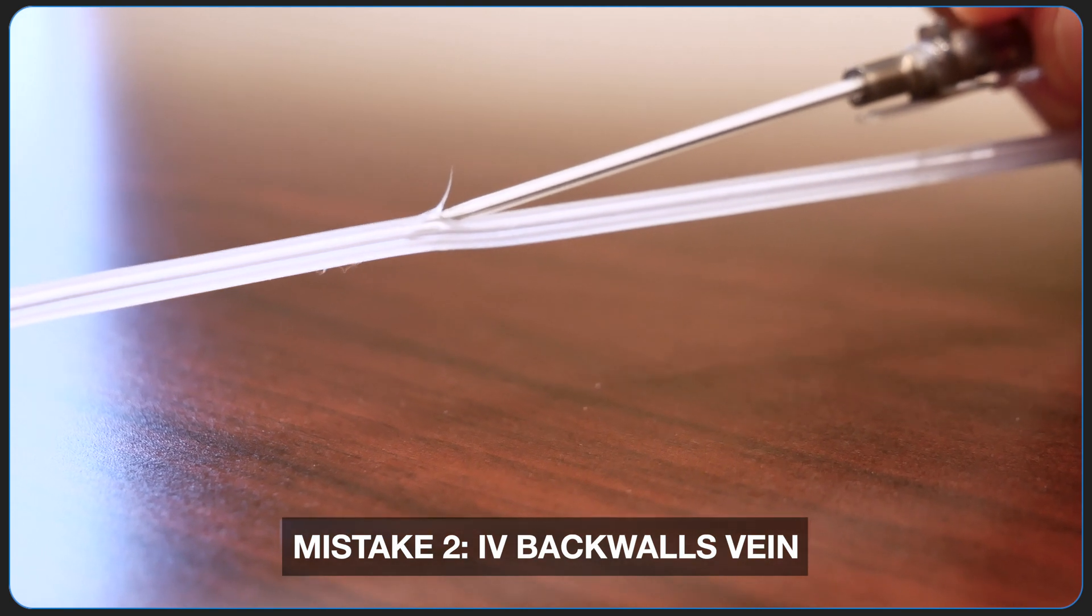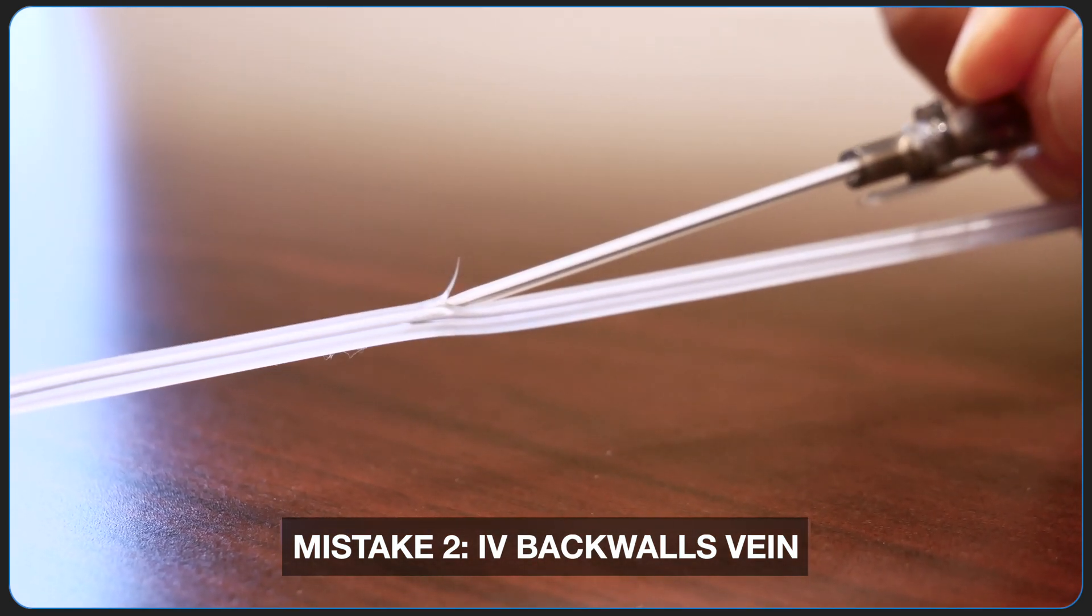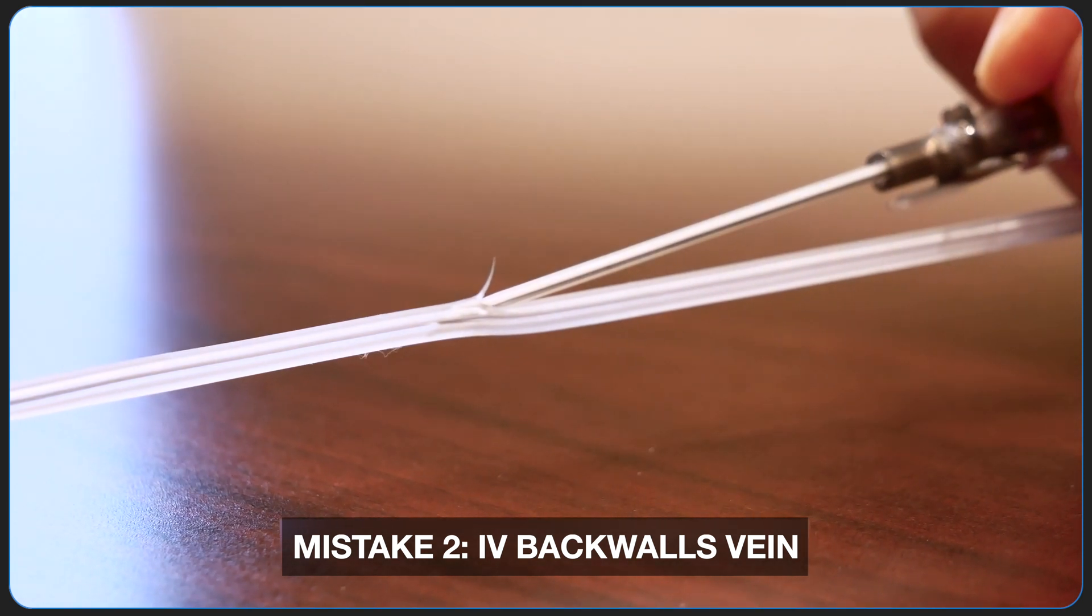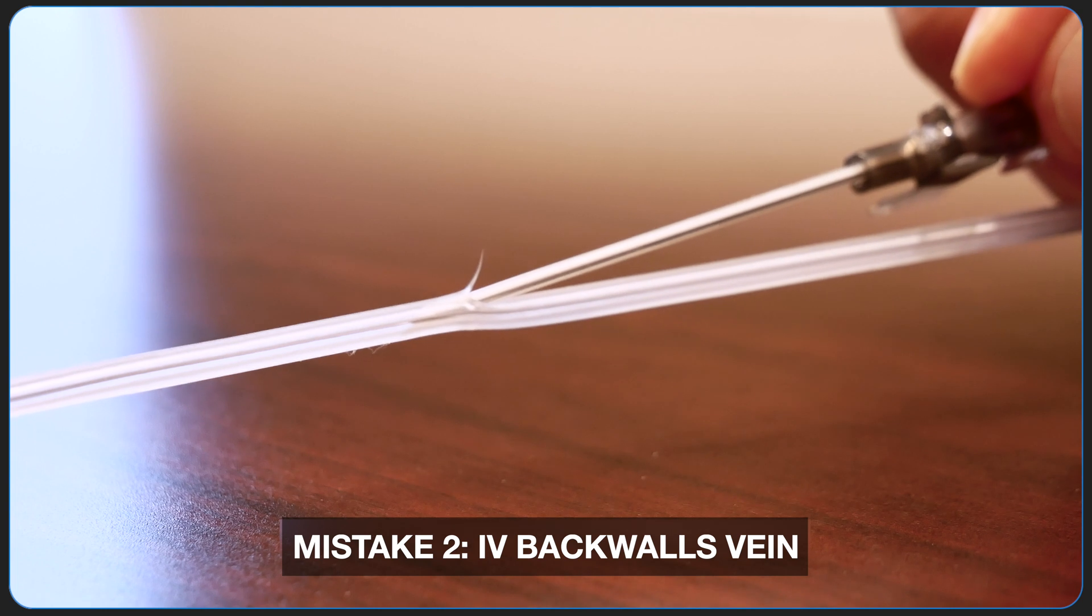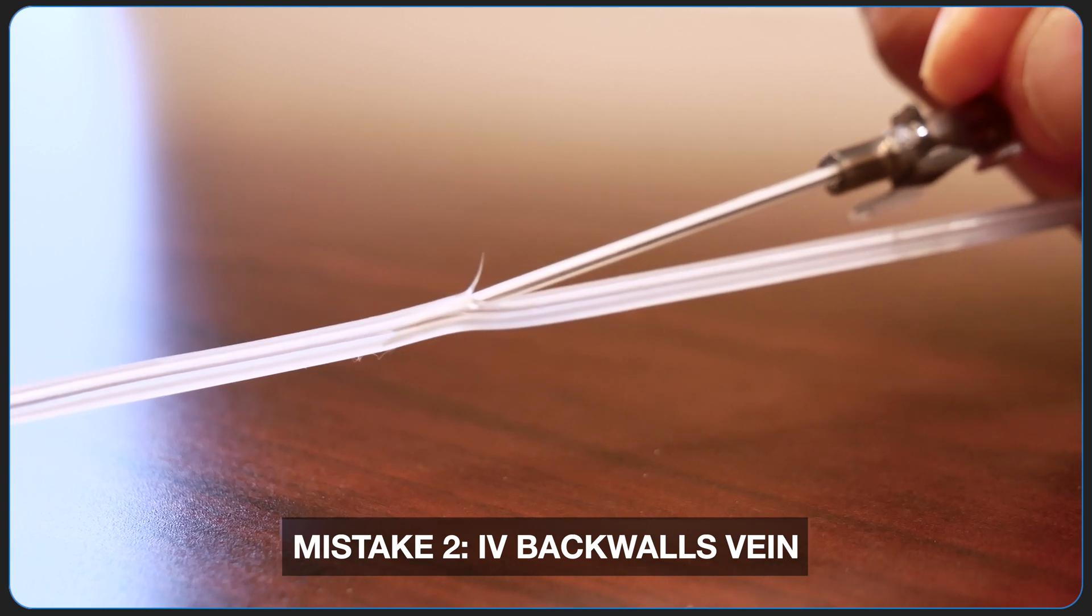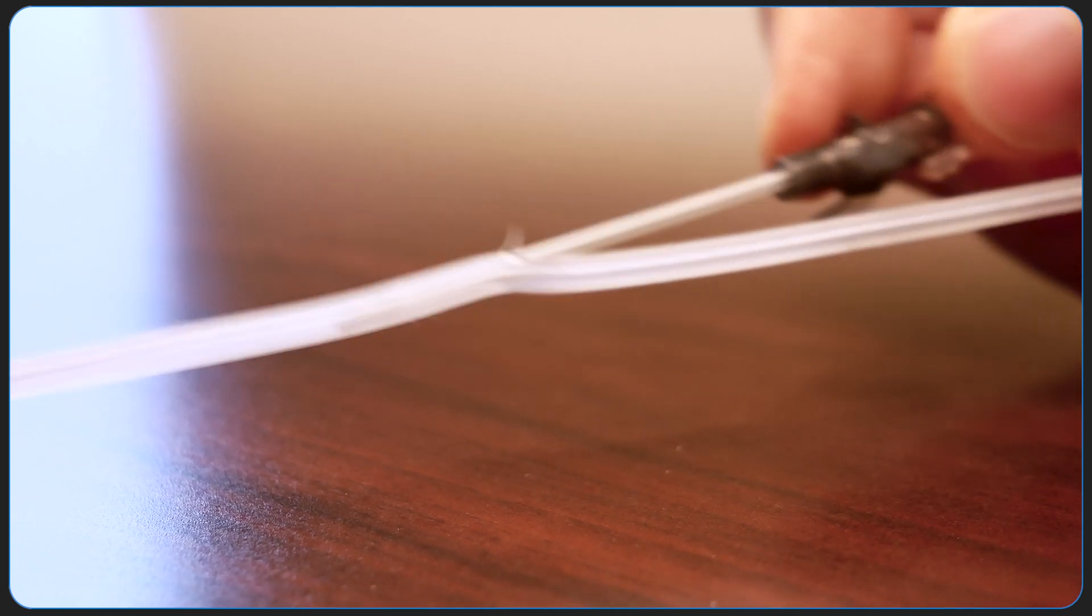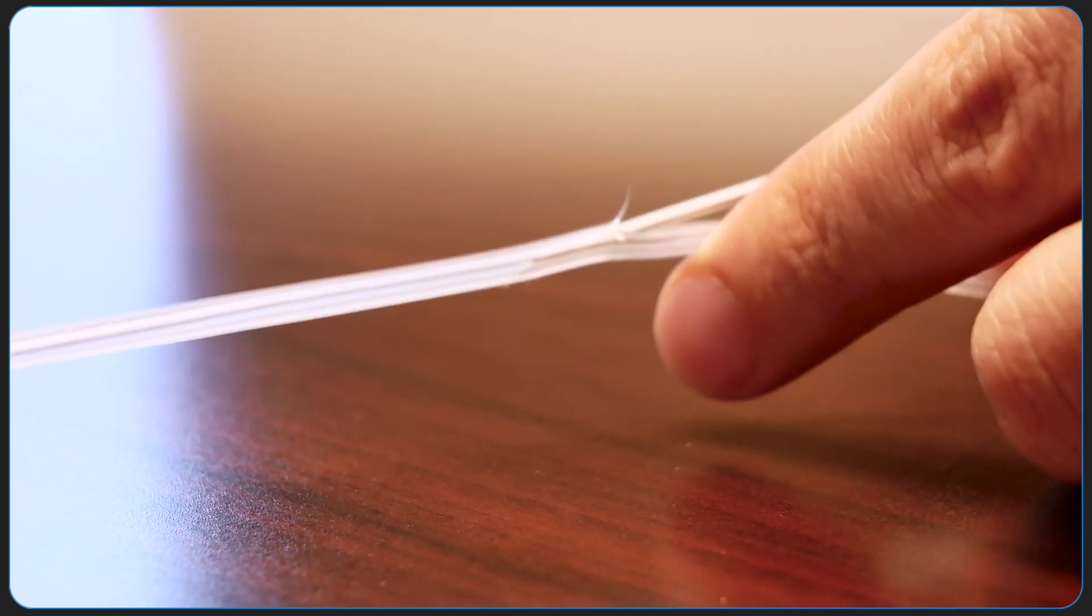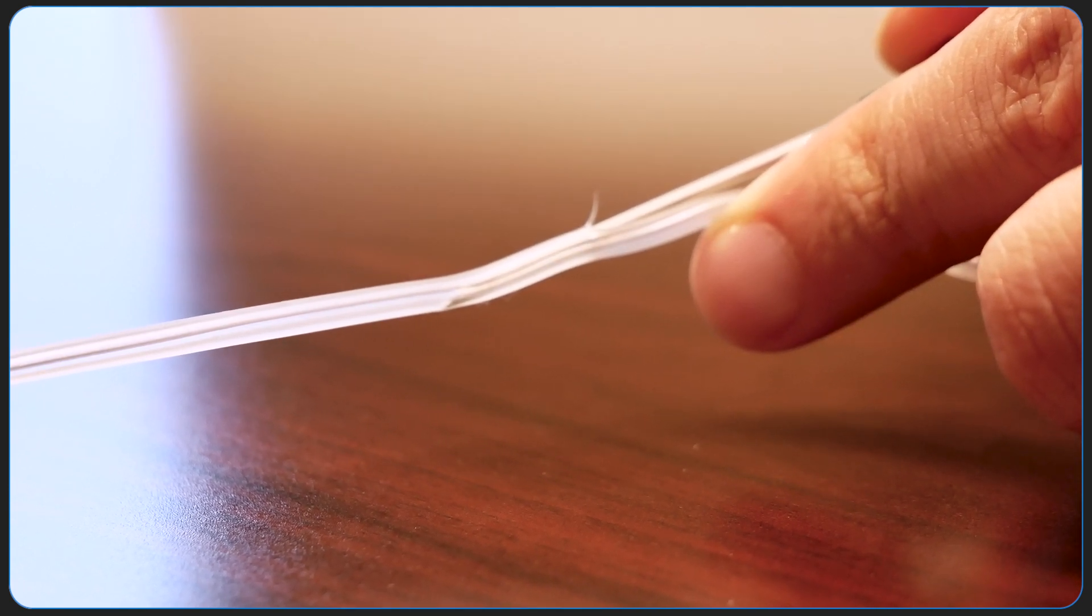Mistake two is backwalling. So remember how sharp this tip is and you only need a small angle. So look if I continue with the same angle even though it's maybe five, ten degrees at most, probably less in that direction, I'm going to start skimming the back of the vein and you can see it starting to penetrate through right there.